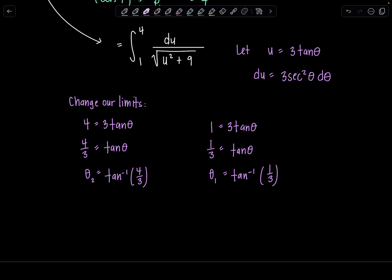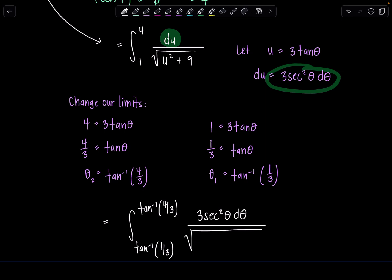Okay, so now let's rewrite our integral all in terms of thetas. So my new lower limit is tan inverse of 1 third. I know, kind of gross, but you just got to deal with it. And then my new upper limit is tan inverse of 4 thirds. And then instead of du in the numerator, I'm going to have all of this right here: 3 secant squared theta d theta over square root u squared. u squared would be 9 tan squared theta plus 9. Voila.